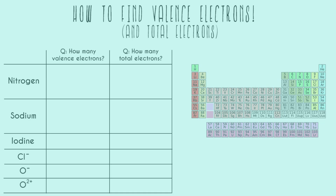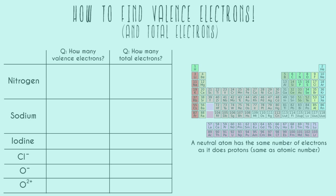Let's start with nitrogen as our first question and we're going to answer how many valence electrons it has and how many total electrons it has. To answer how many total electrons it has, we have to learn this fact: a neutral atom has the same number of electrons as it does protons, and that's the same as the atomic number.